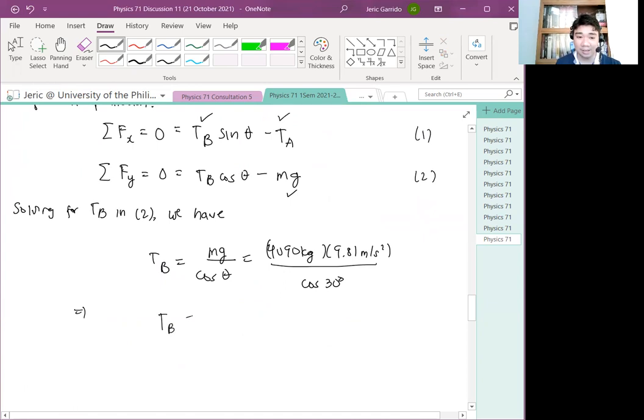And hence, when we do that, we get TB equals 4.63 times 10 to the fourth kilograms or 46 kilonewtons. Wait, kilograms, newtons. Sorry for that. TB is 4.63 times 10 to the fourth newtons. Did you get that? Yes, sir. Okay.